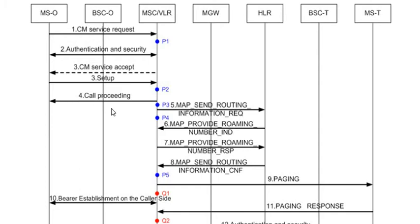Once the Setup message is received by the MSC, a Call Proceeding message is sent to the originating side indicating the call is being served by the MSC/VLR. The MSC then initiates a MAP procedure, which includes sending a MAP Send Routing Information request message to the destination HLR.